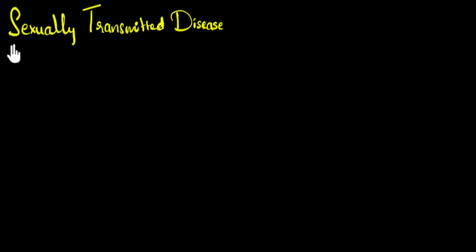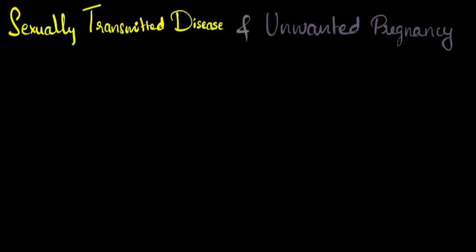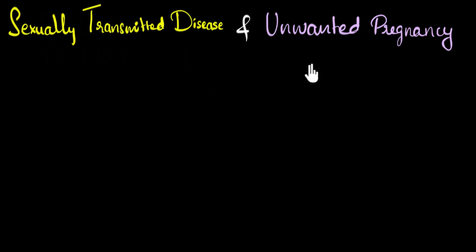Please note that this video has sexual health content. Sexual intercourse can cause two big problems: one, sexually transmitted diseases, which in short we call STDs, and second, it can also cause unwanted pregnancy. In this video, we'll talk about how contraceptives can help us avoid these. But before we begin, let's talk a little bit about these two.